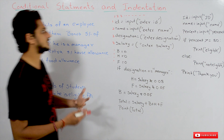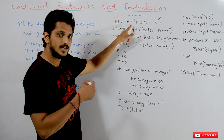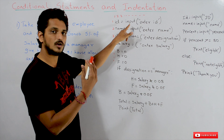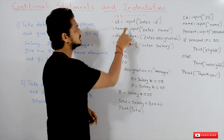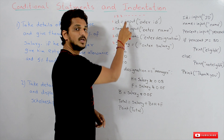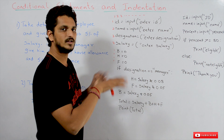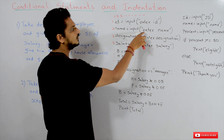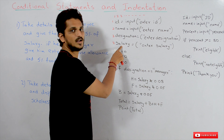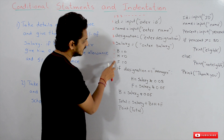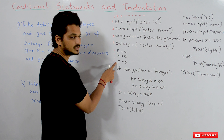Let us check the code. We take the id from the user using the input function, as discussed in our previous class. From the keyboard we will take the input: enter the id, enter the name, enter the designation, and we have to take the salary value. We are also taking three extra variables for bonus, house allowances, and food allowances.